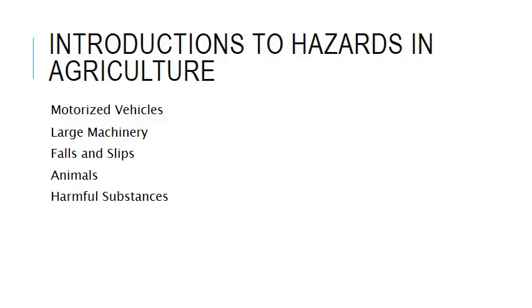There are many categories and subcategories of hazards that can contribute to injuries, illnesses, and fatalities in the agricultural industry. The major hazards this presentation will focus on are motorized vehicles, large machinery, falls and slips, injuries due to animals, and interaction with harmful substances.